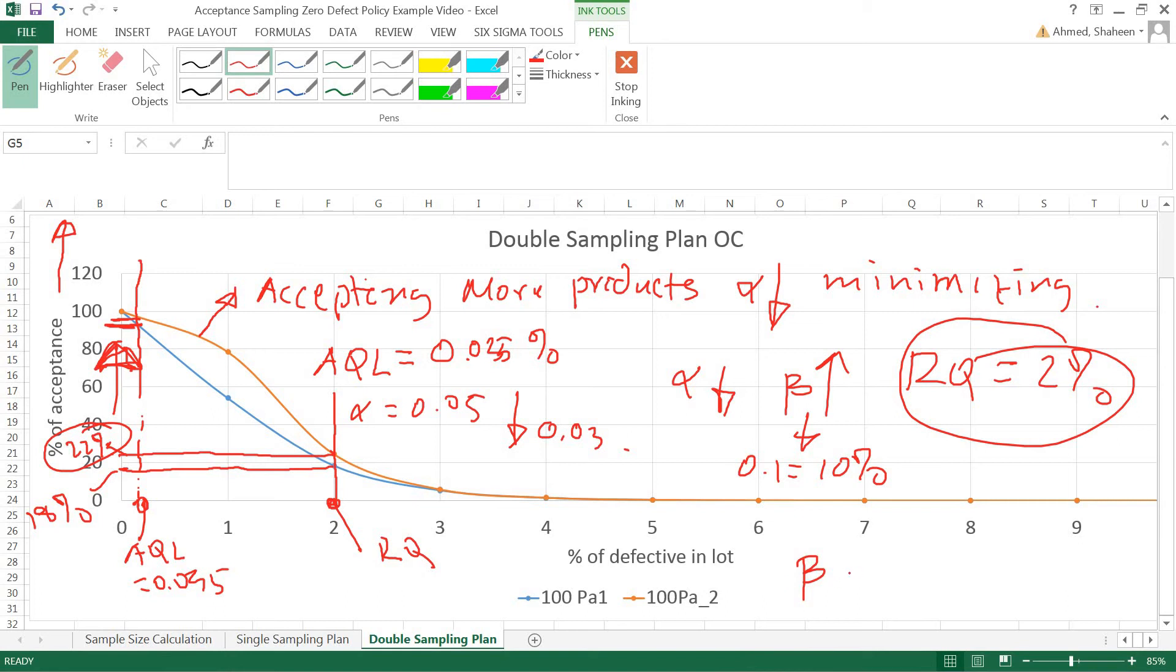Your consumer beta in this particular case was 18 percent at the beginning for the single sampling plan. This blue curve is the single sampling plan, this orange curve is the double sampling one. Your consumer risk went from 18 percent to 22 percent, so their risk increases by four percent.